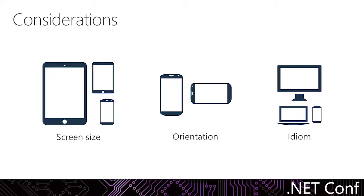We're going to constrain the problem into three different ways. The most common and most obvious one might be screen size — scaling from small phones all the way up to 4K TVs. Obviously a bigger screen, and we've got some things to consider with that.